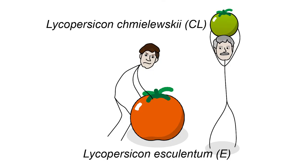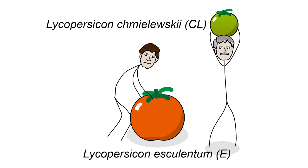The researchers selected parents with vastly different phenotypes to maximize the number of detectable QTLs. These were Lycopersicon esculentum, denoted E, and Lycopersicon chmielewskii, denoted CL, which were bred through the following backcross design to produce 237 plants.